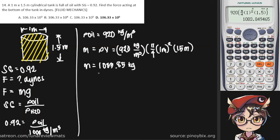Now that we have the mass at the bottom of our tank, let us simply refer back to our equation: F is equal to the mass times the gravitational acceleration. We multiply it by 9.81 meters per second squared.